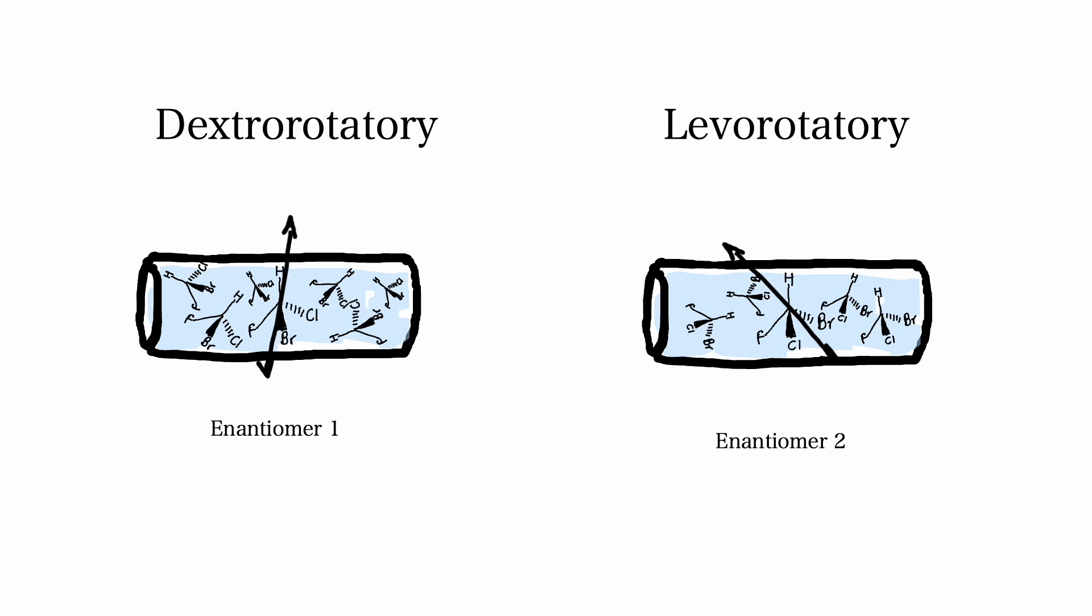Classification of molecules as dextrorotatory or levorotatory depends on the direction in which the molecule causes the rotation of plane polarized light, and this is observed using a polarimeter.